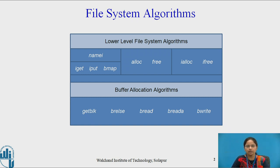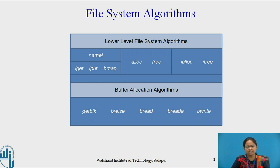As we already know, there are different buffer allocation algorithms: getblock, buffer release, buffer read, buffer read ahead, and buffer write. The getblock algorithm is used for allocation of a buffer. Buffer release algorithm is used to release a buffer, while buffer read algorithm is used to read the content of the disk block. Buffer read ahead algorithm is used to read subsequent content from the disk block to the buffer, while buffer write algorithm is used to write the content of the buffer to the disk block.